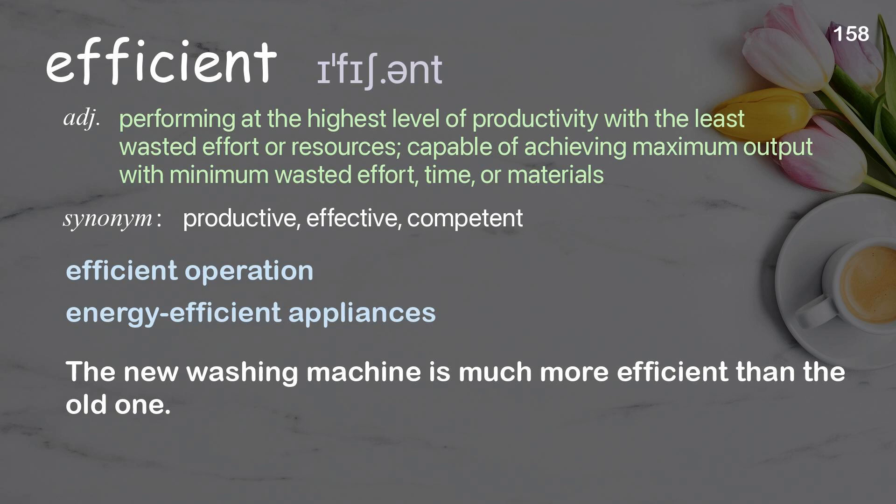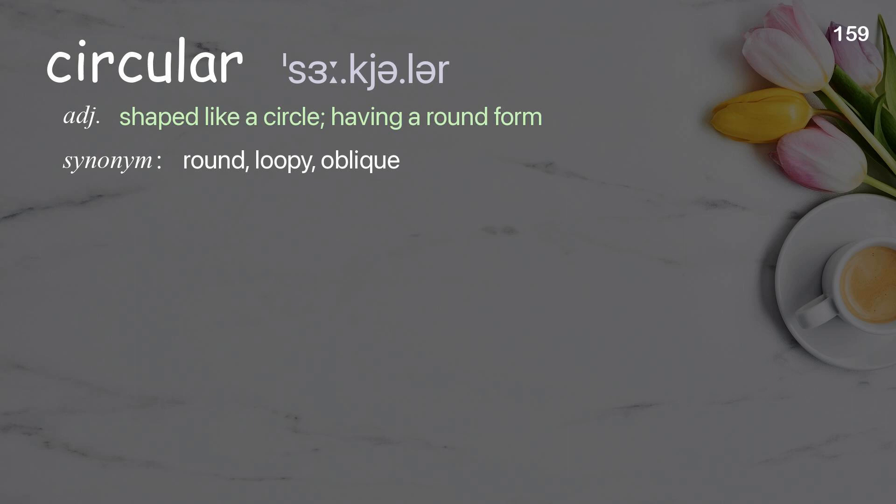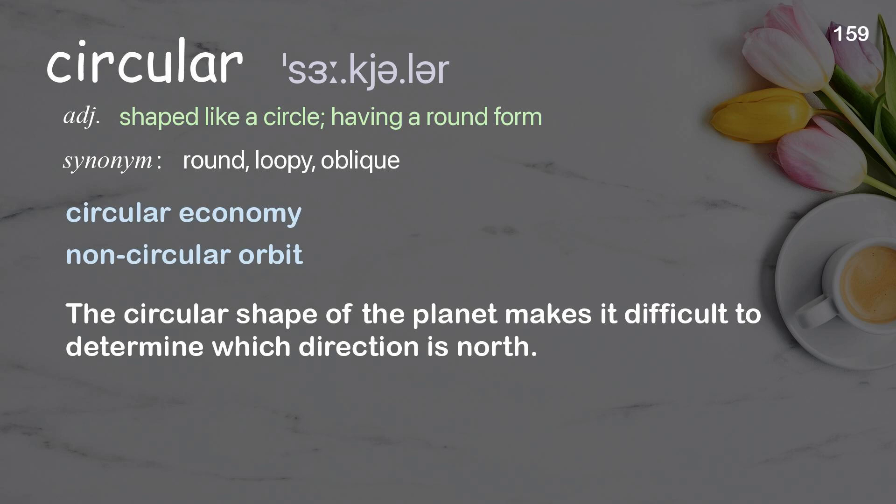Circular: shaped like a circle; having a round form. Examples: circular economy, non-circular orbit. The circular shape of the planet makes it difficult to determine which direction is north.